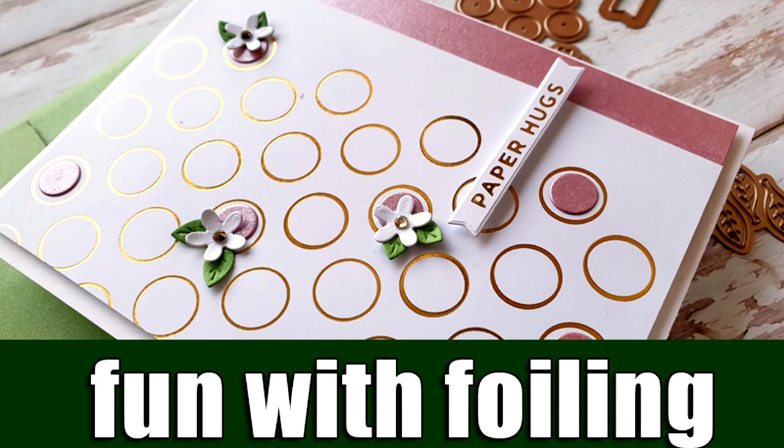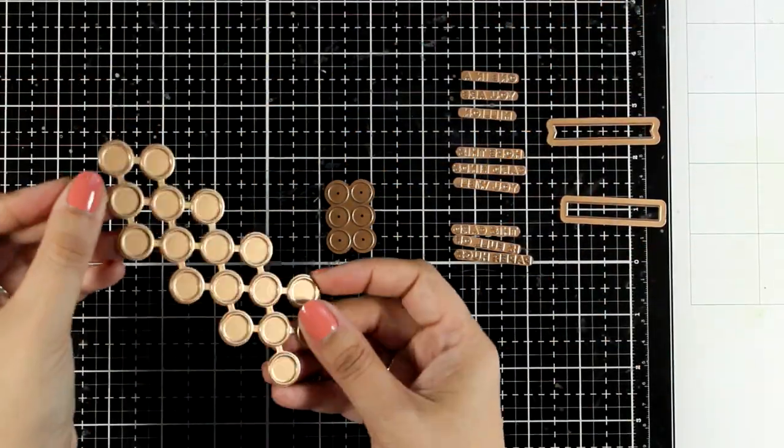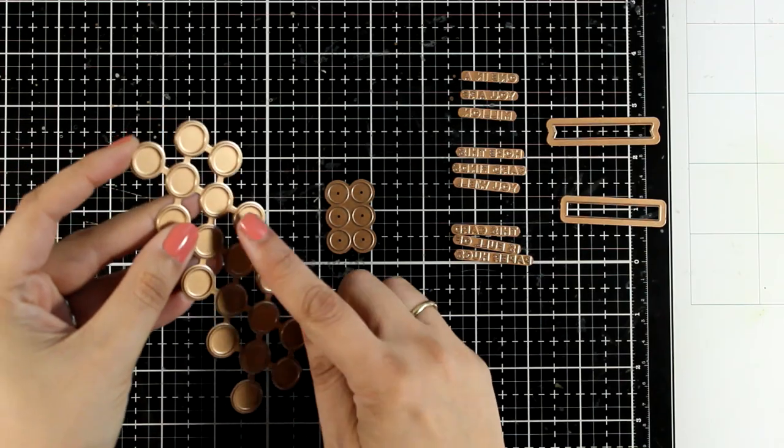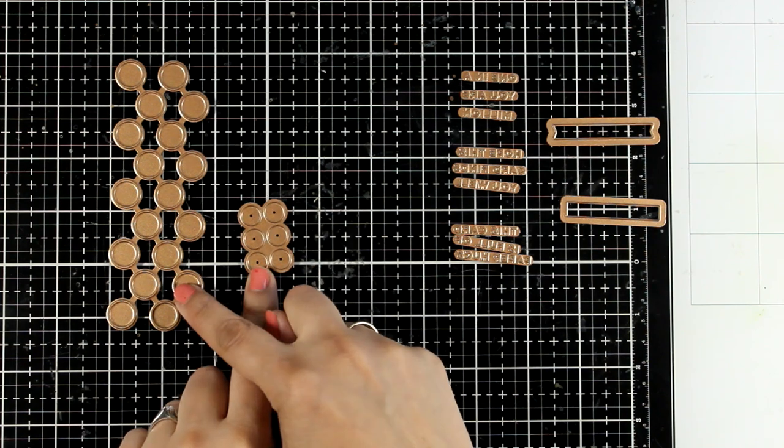Hi my crafty friends and welcome back to another card making video. Today I'm going to play with foil and I have here the May Glimmer Hot Foil Kit. It comes with this pattern of circles.